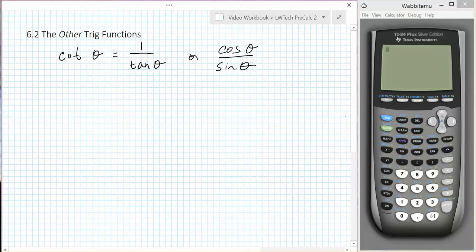Either way, since our cotangent function can be represented as a rational function where we have variables in the denominator, we again have to be concerned about places where our function will be undefined. Our cotangent ends up having vertical asymptotes any time that the tangent of theta equals 0, or that the sine of theta equals 0.